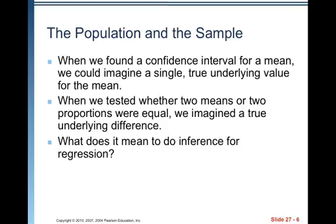When we found a confidence interval for a mean, we can imagine a single true underlying value for the mean. When we tested whether two means or two proportions were equal, we imagined a true underlying difference.